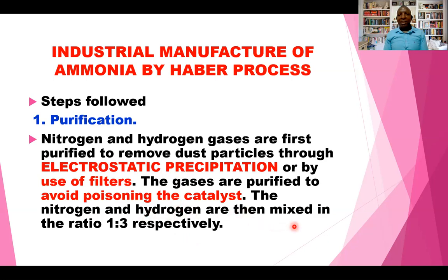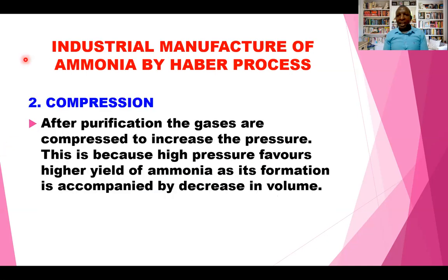The nitrogen and hydrogen are mixed in the ratio of 1:3 respectively. So if you have one litre of nitrogen, it should be mixed with three litres of hydrogen gas. The gases are purified via electrostatic precipitation and mixed in the ratio of 1:3 — for every volume of nitrogen, you need three volumes of hydrogen gas.